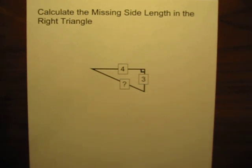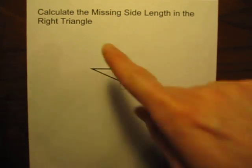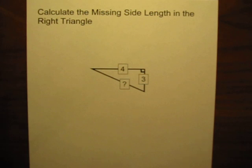One of my favorite mathematical concepts is the Pythagorean Theorem. I don't know why, I just really enjoy using the Pythagorean Theorem to solve different problems. And so that's what we're going to do right here. The problem asks us to calculate the missing side length of the right triangle.